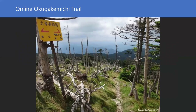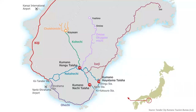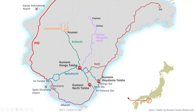Omine Okugakimichi is a very famous trail-based tourism destination in Japan. This map shows the hiking and trekking routes in the Kii Mountain Range. There is also the famous Kumano Kodo, but Omine Okugakimichi is the central purple line in the middle of the map. I will now explain the key characteristics of this trail.